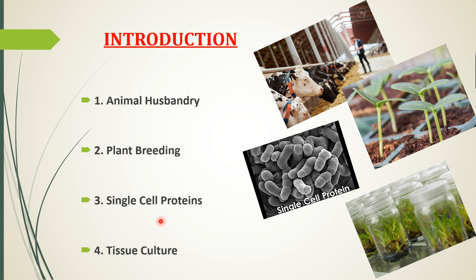Another very important point is single cell protein. This is a new term for you — it is also called SCP in short. SCP production can be used at large scale as well as in small scale industries. Single cell protein means the production of proteins from microorganisms for animal and human nutrition.